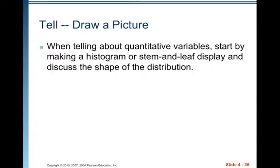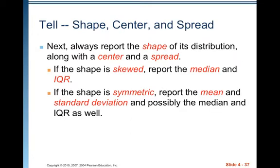When describing quantitative variables, start by making a histogram, stem-and-leaf display, or dot plot, and discuss the shape of the distribution. Next, report the shape along with the center and spread — and it's always good to note outliers too. If the shape is skewed, report the median and IQR. If the shape is symmetric, report the mean and standard deviation, and possibly the median and IQR as well.